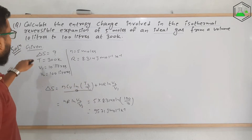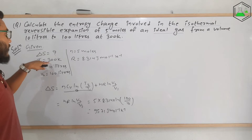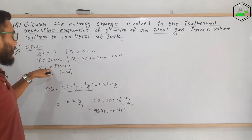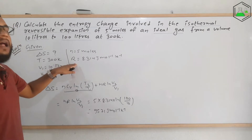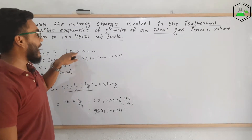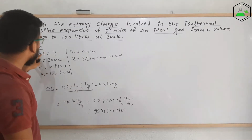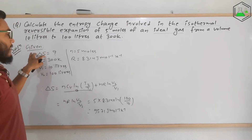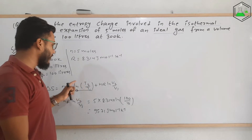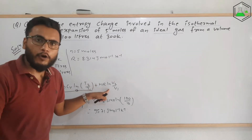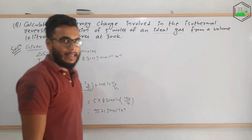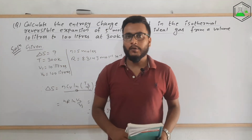The question says the temperature is constant — that is, it is an isothermal process — volume is changing from 10 liters to 100 liters, R is a known value, and n is 5 moles. We need to find ΔS, the change in entropy. So we applied the formula for the dependence of entropy on temperature and volume to get the required value of ΔS. This is the first numerical problem.